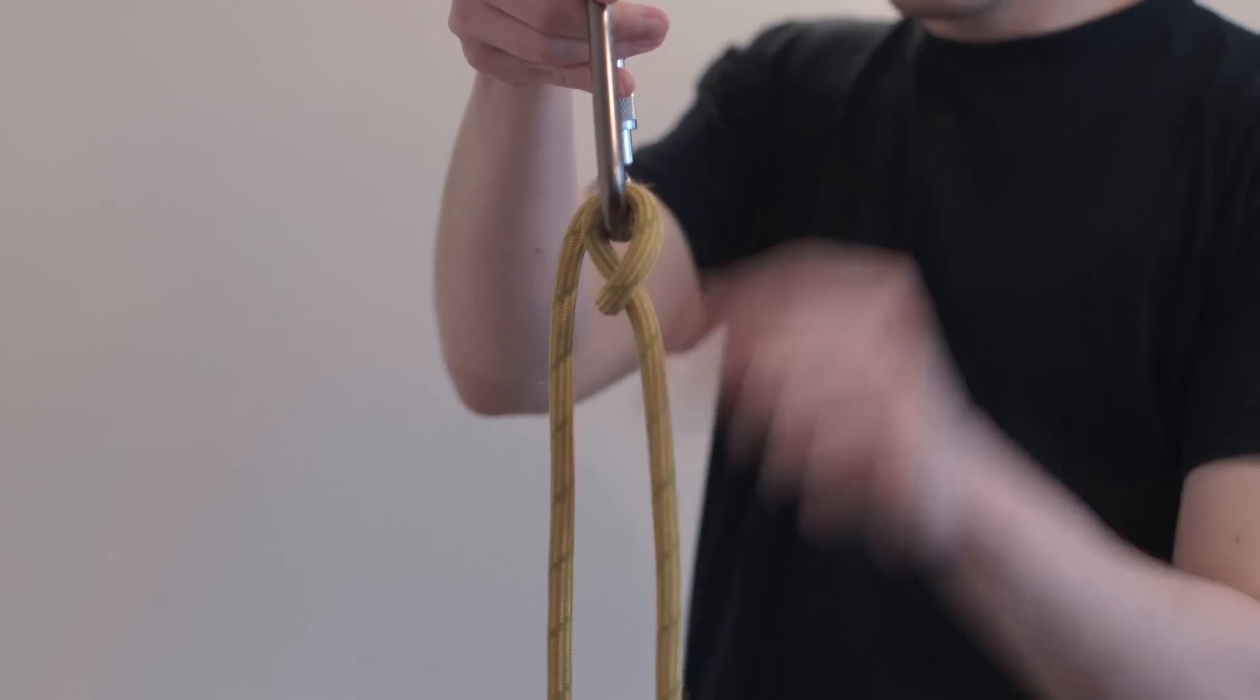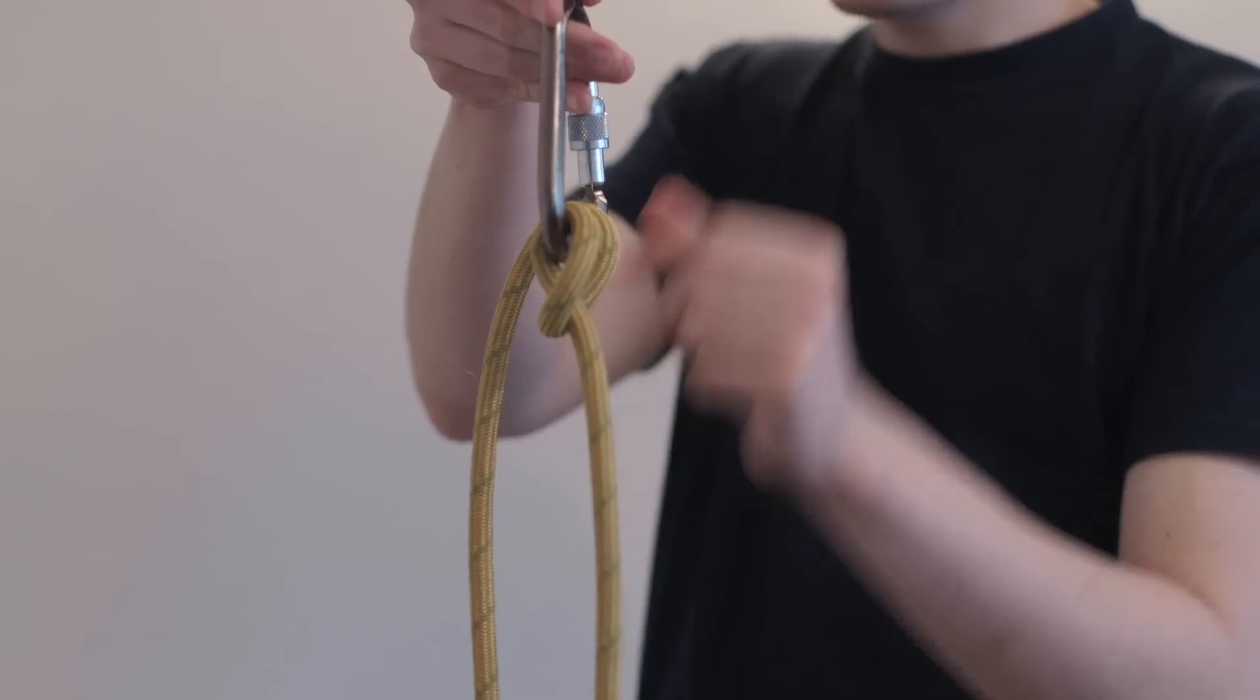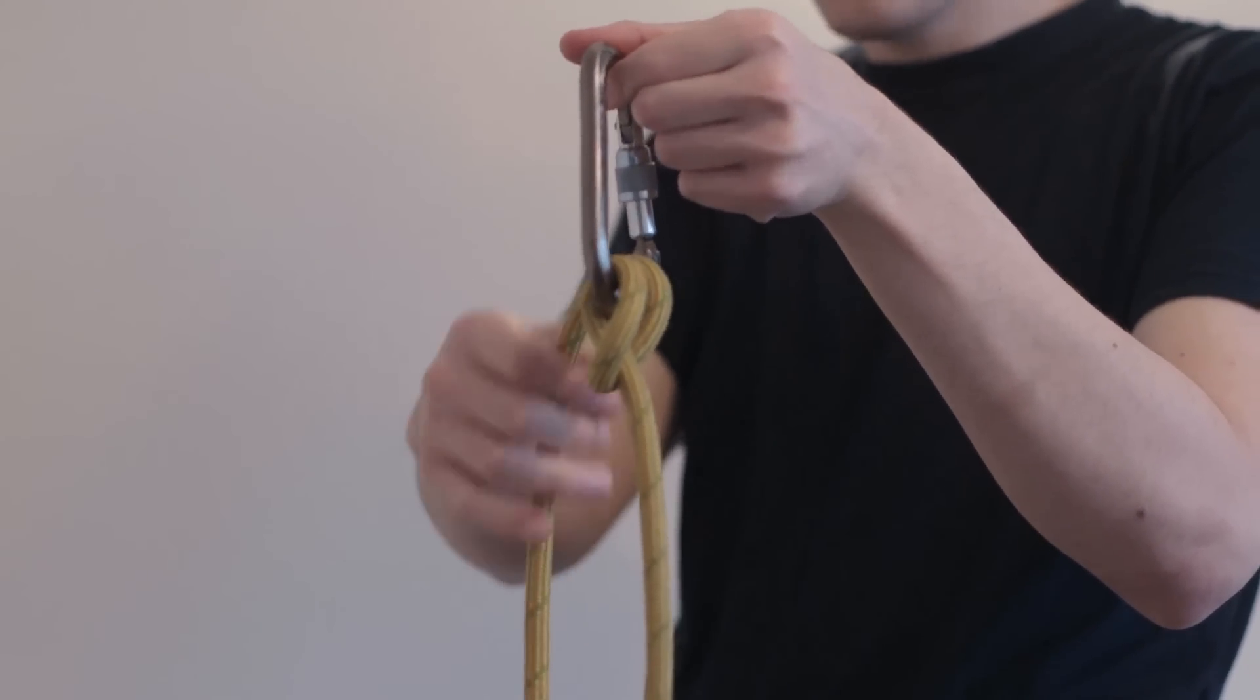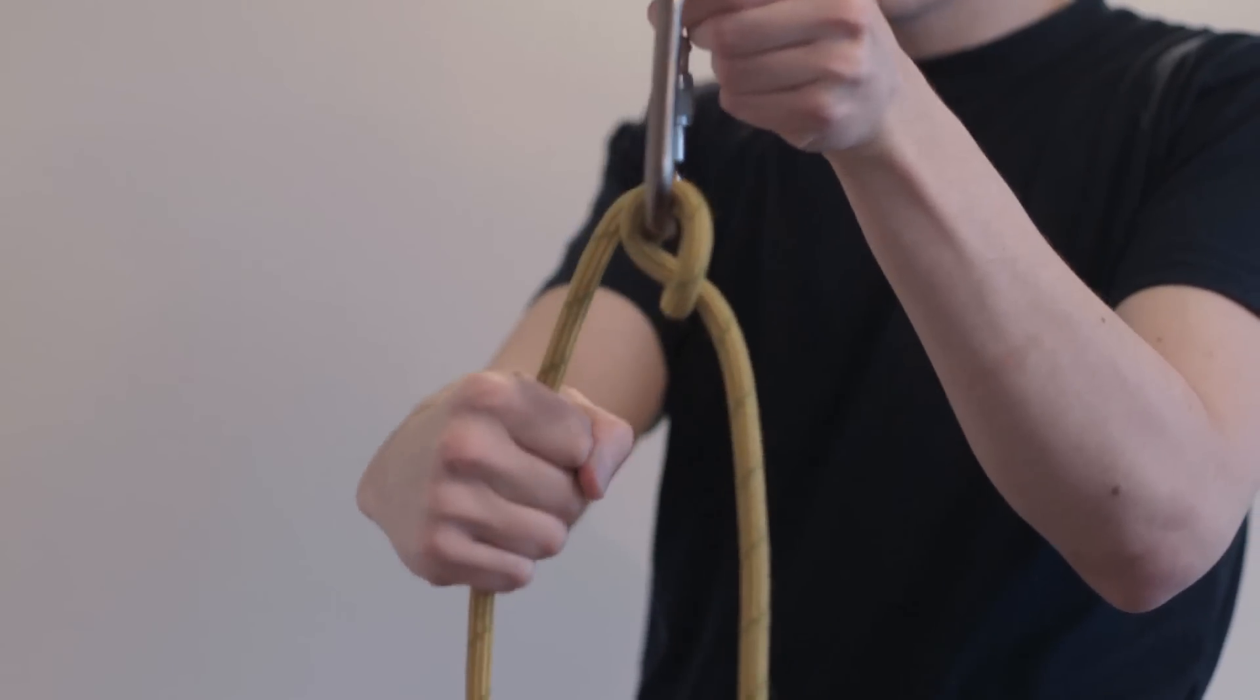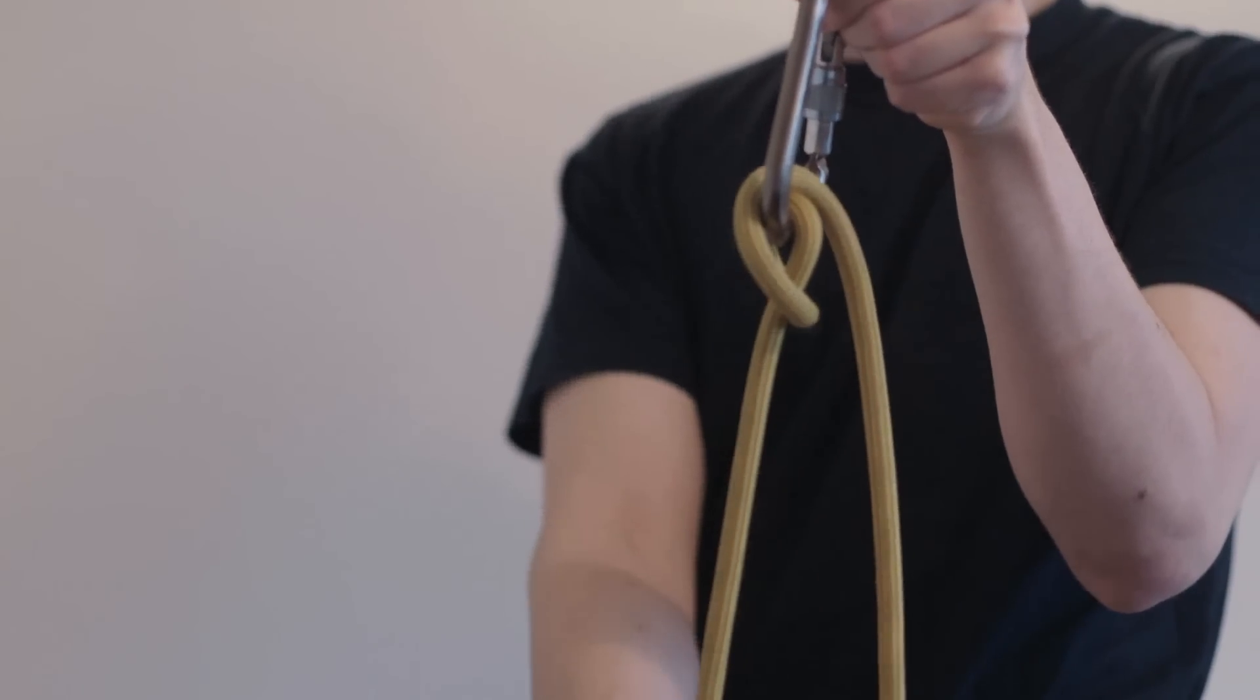So let's say that this is the climber's end, and this is the belayer's end. If I want to bring up a second climber, I would attach this carabiner onto the anchor system, and I would just simply take in slack like so. And notice how it flipped over there, that's perfectly normal.